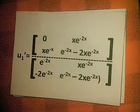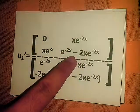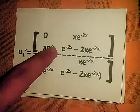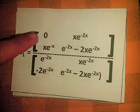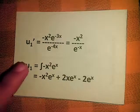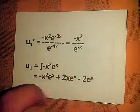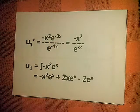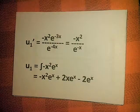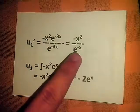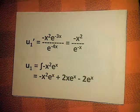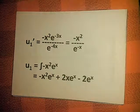In order to get u1', we multiply 0 and this, minus x·e^(-2x) times x·e^(-x). Doing the same in the denominator, u1' = -x²·e^(-3x) / e^(-4x) = -x²·e^(x). Integrating this gives u1 = -x²·e^(-x) + 2x·e^(-x) - 2e^(-x).